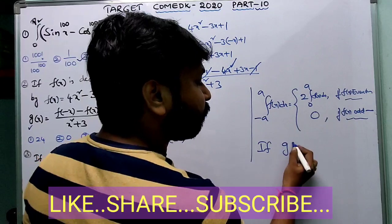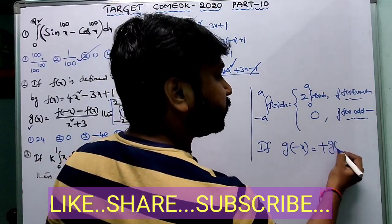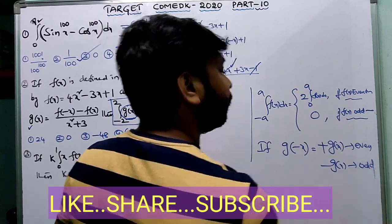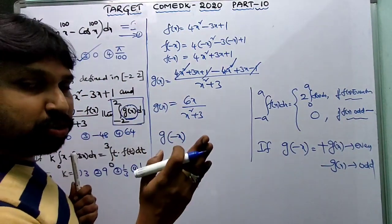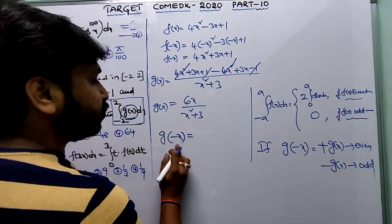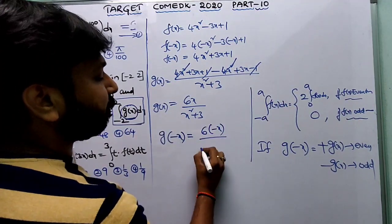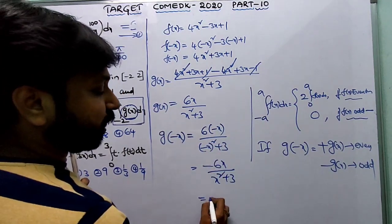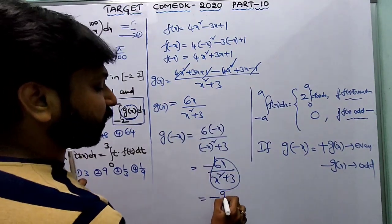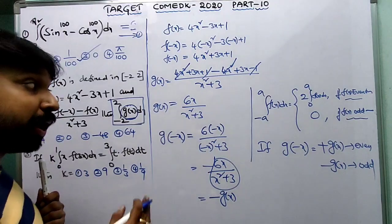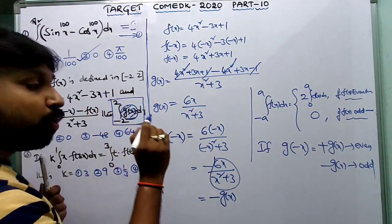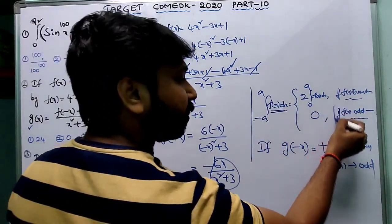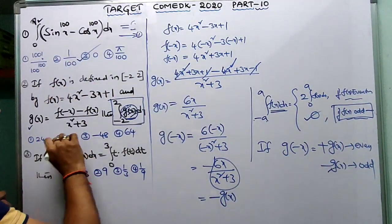To check: substitute minus x. If g(minus x) = plus g(x), it's even; if g(minus x) = minus g(x), it's odd. Computing: g(minus x) = 6(minus x) / ((minus x)² + 3) = minus 6x / (x² + 3) = minus g(x). So g is an odd function. Therefore the integral from -2 to 2 equals zero.